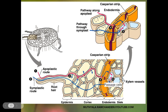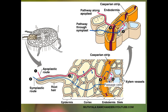The symplastic route means the water absorbed by imbibition, diffusion, or osmosis enters the inner portion of the root system. Finally, the water reaches the inner portion of cells, again reaches the passage cells, and then reaches the vessels of the xylem cells. The absorbed water then moves upward by the mechanism of ascent of sap.